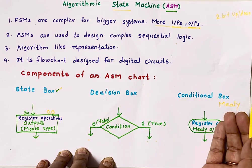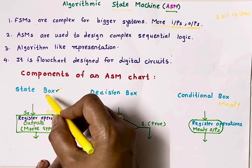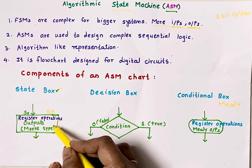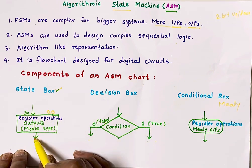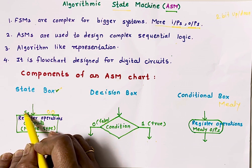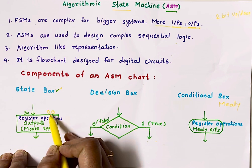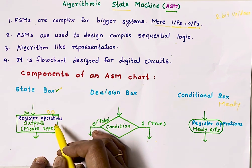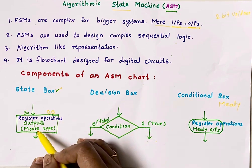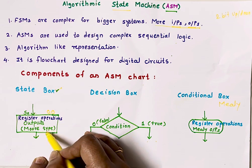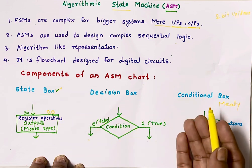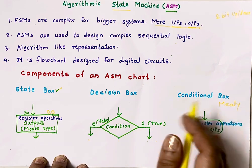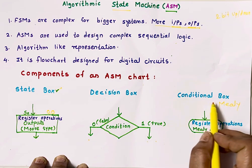Before we design our circuit, we must know which components to use in this flowchart. The very first is the state box, because this is a state machine. It is rectangular in shape with one input and one output. We write the name of the state on the left-hand side of the incoming arrow and the binary equivalent on the right-hand side. Inside the state box, we write the output. In the case of a Moore machine, output depends on states only, so we write Moore-type outputs inside the state box. In a Mealy machine, output depends on state as well as inputs, so we use a conditional output box for Mealy machines.